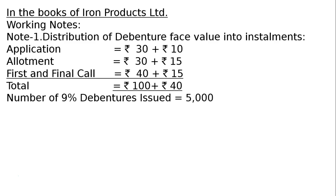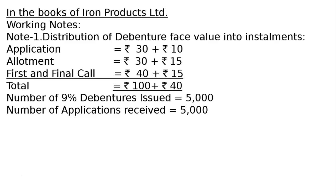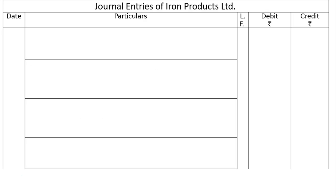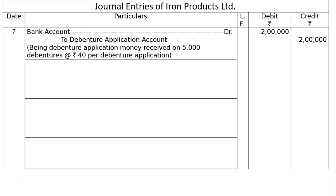Number of 9% debentures issued is 5,000. The company issued 9% debentures and the number of applications received is also 5,000. Draw a proper journal format in the books of Iron Products Ltd. There is no date.